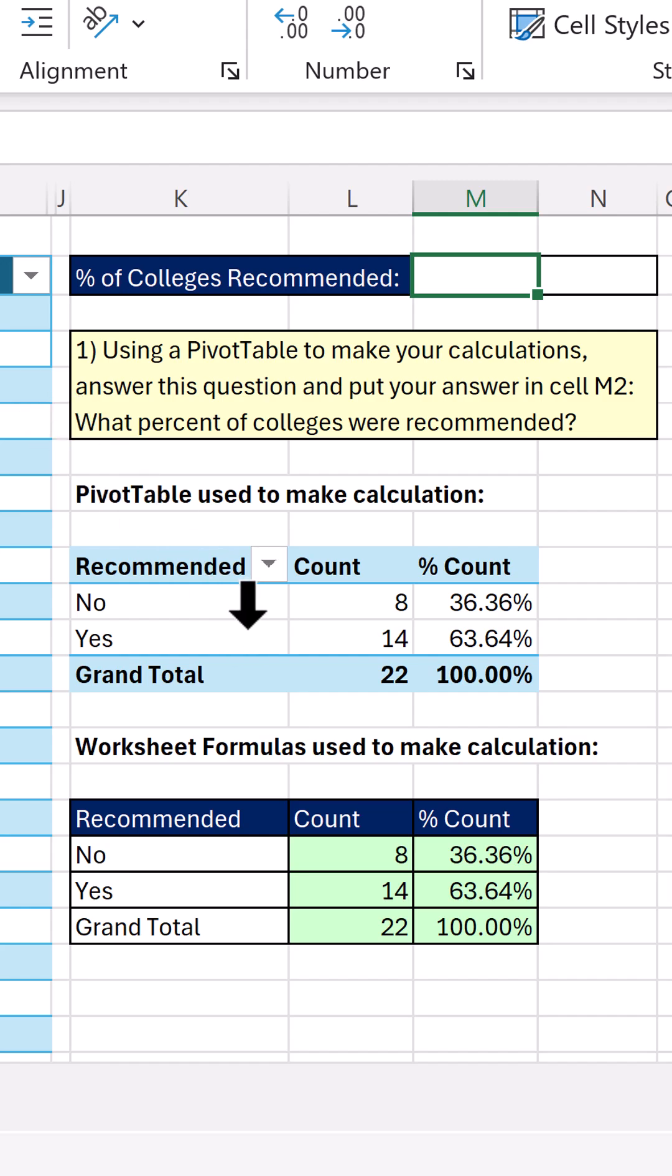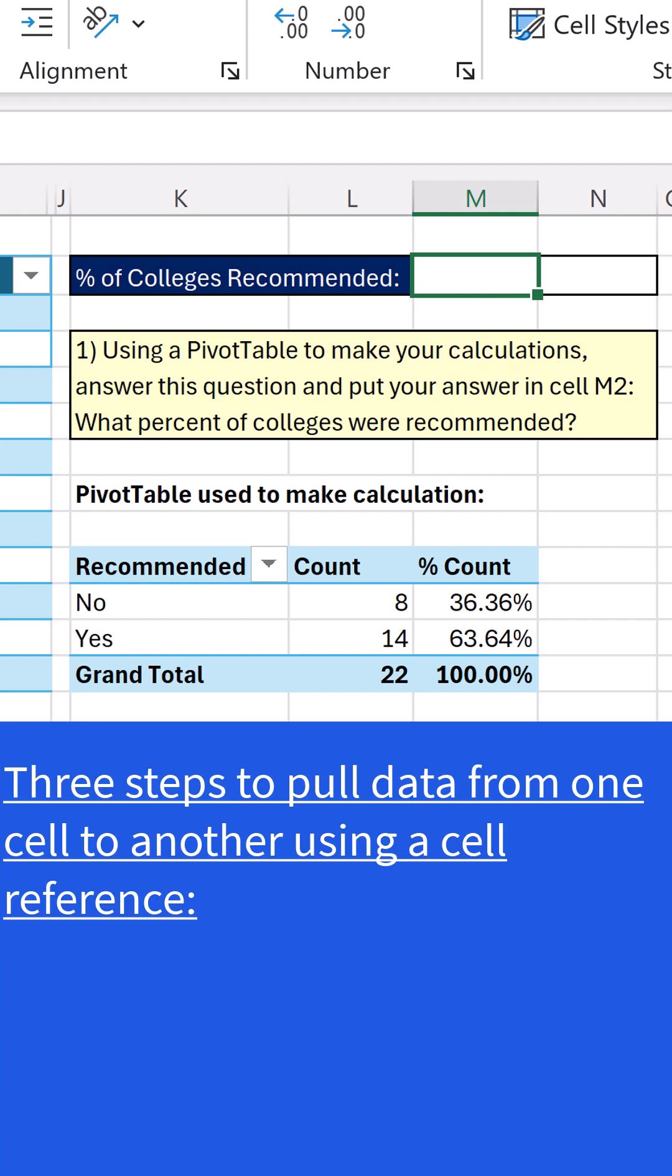The question for this video is, how do I get the answer? What percent of colleges were recommended? That's 63.64. And how do I get that up here into the answer cell? Because the directions say, hey, put your answer in M2. Well,